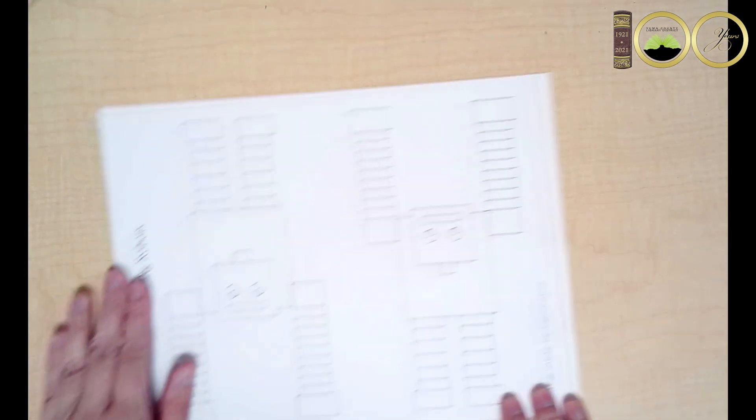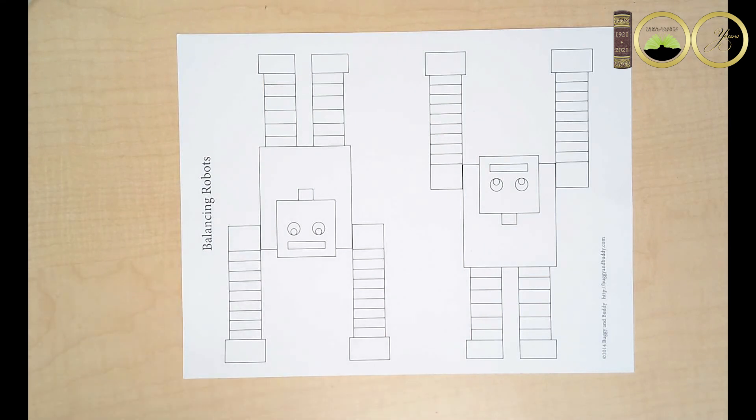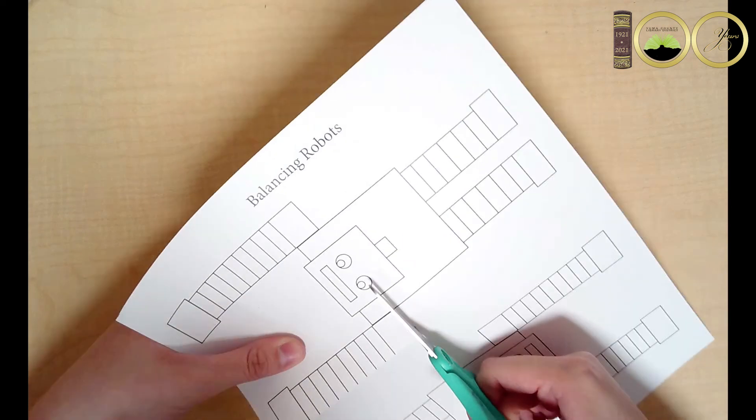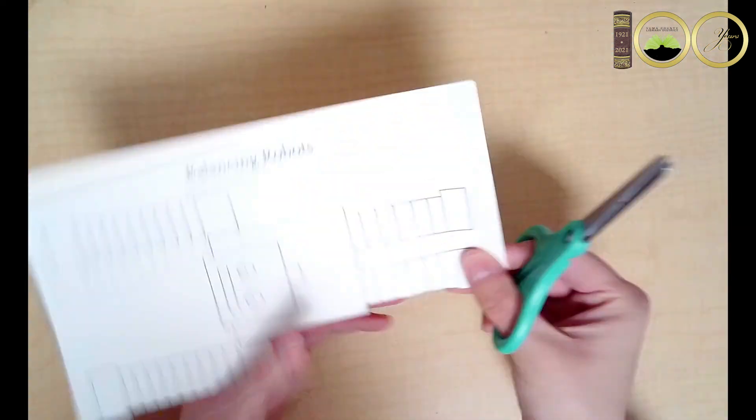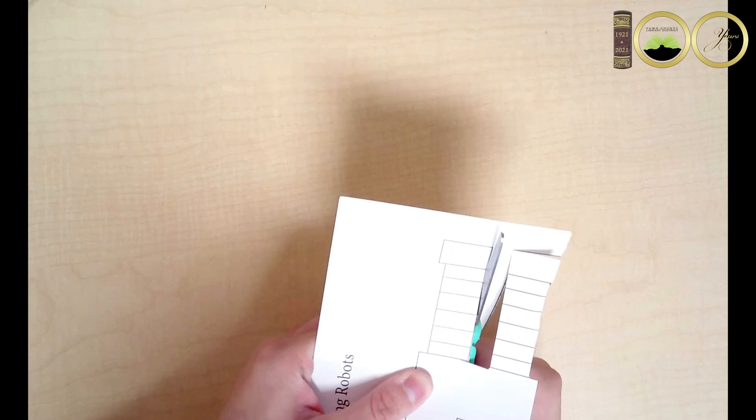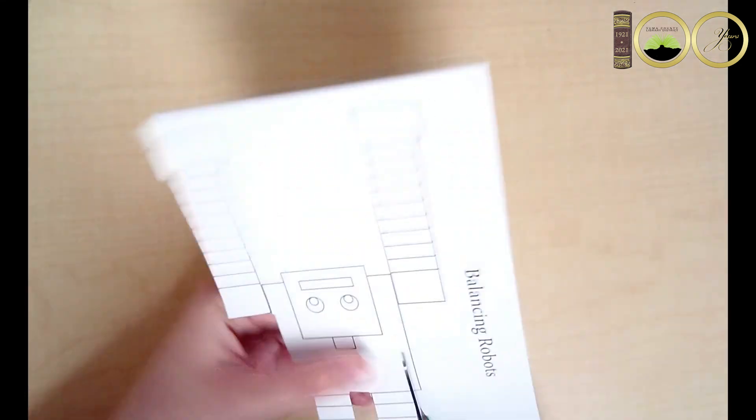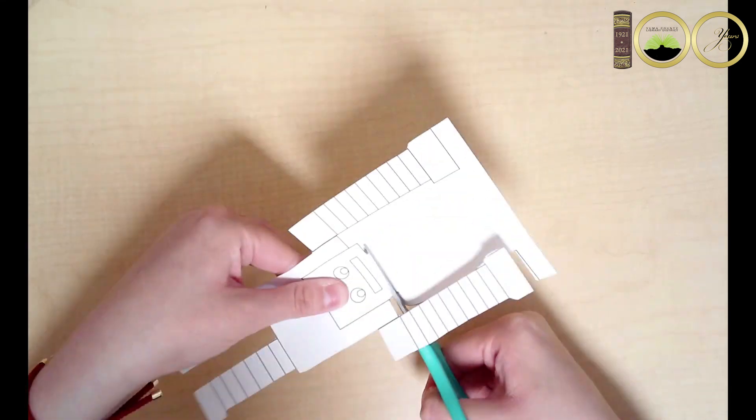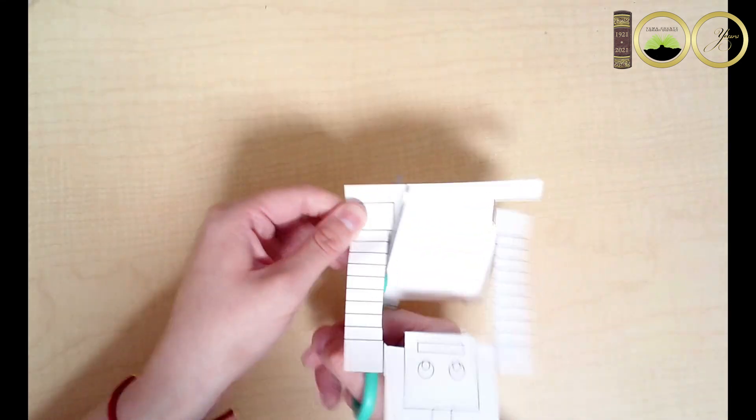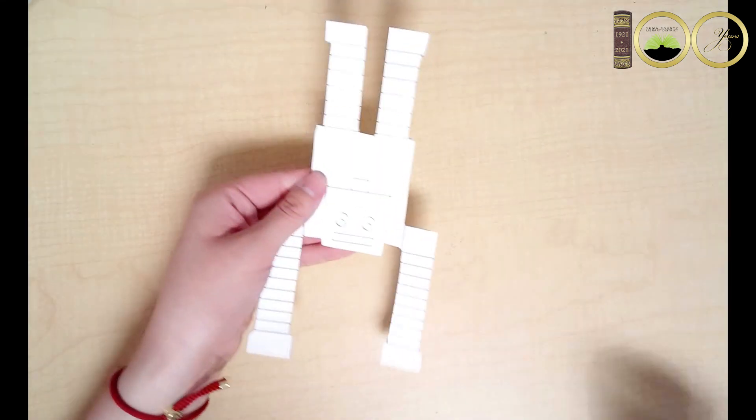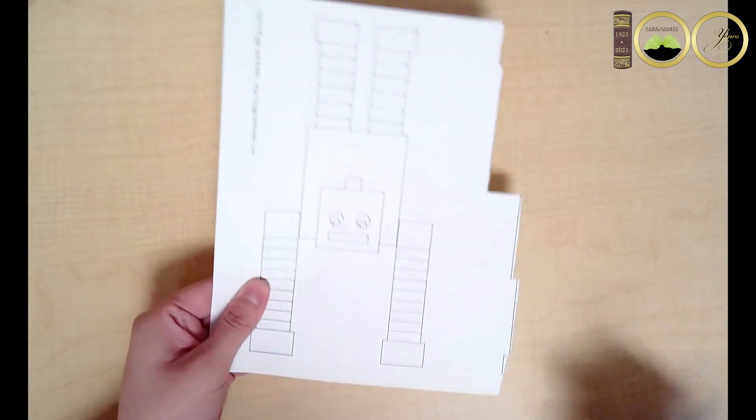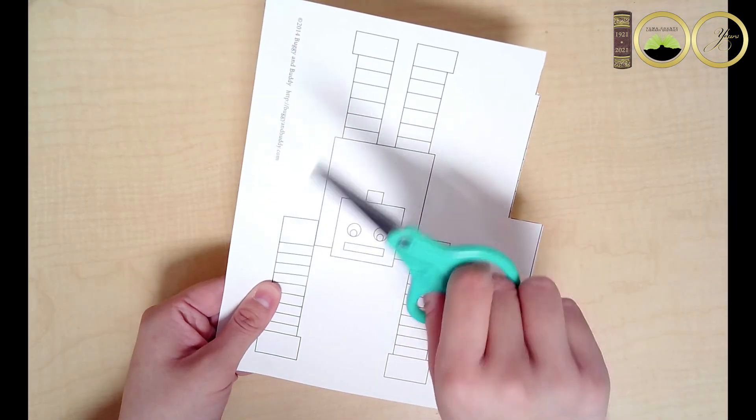So the first thing you're going to want to do is cut out the front side of the robot. You're also going to cut out the second robot, which will be used for the back.